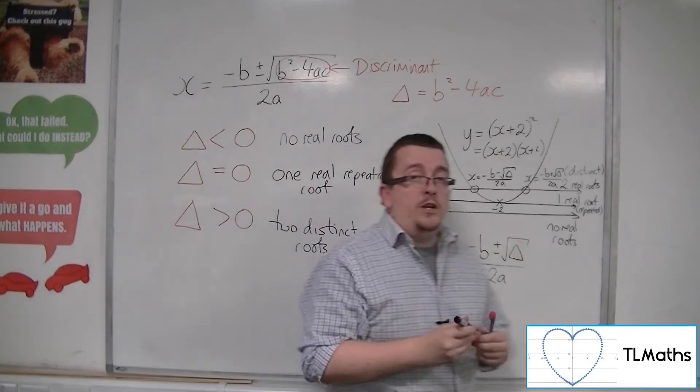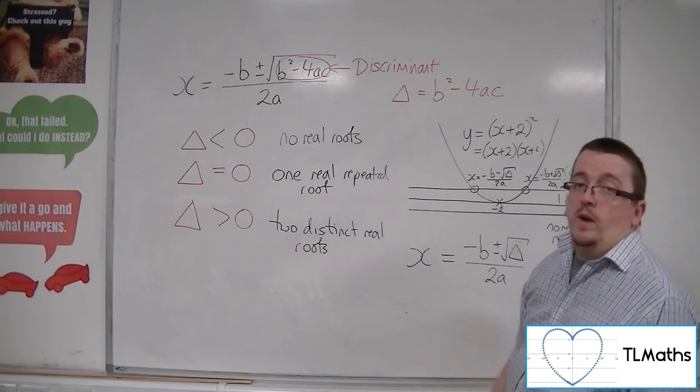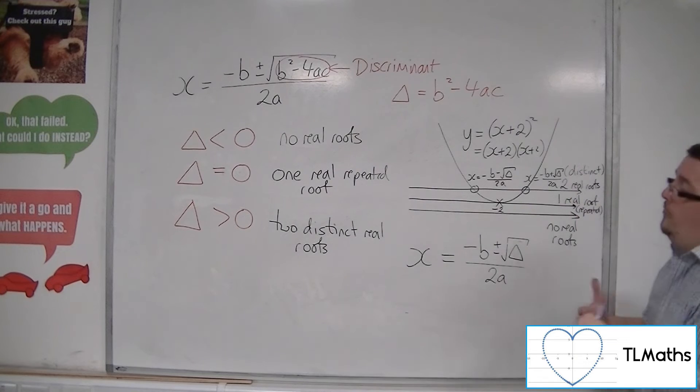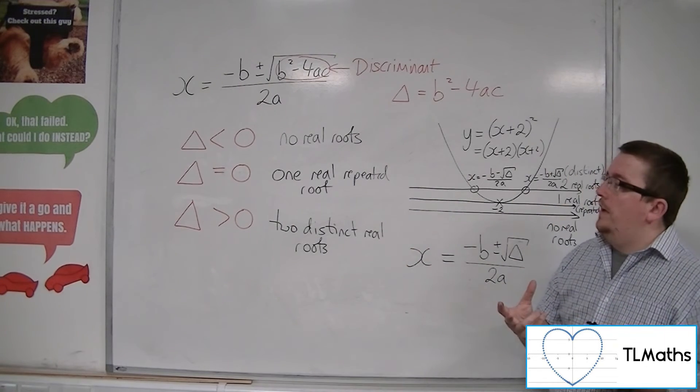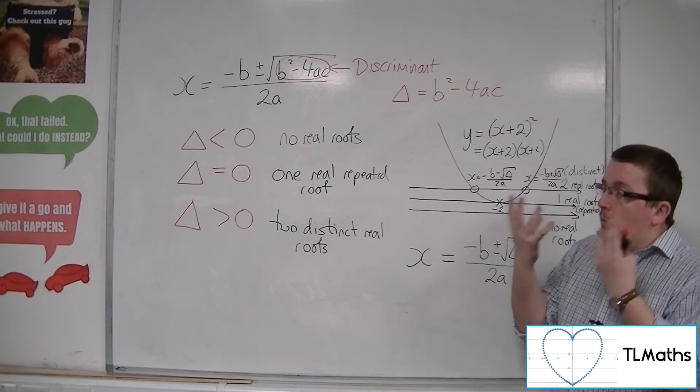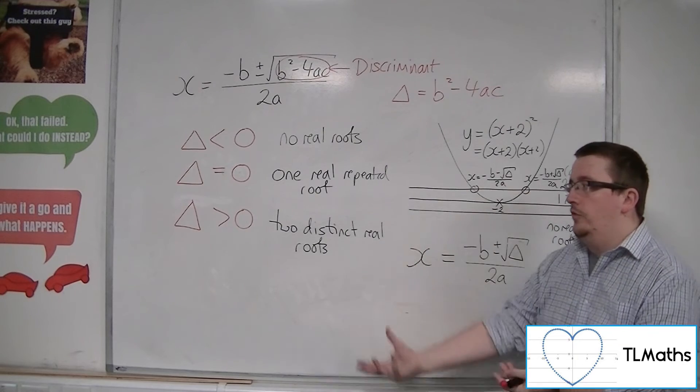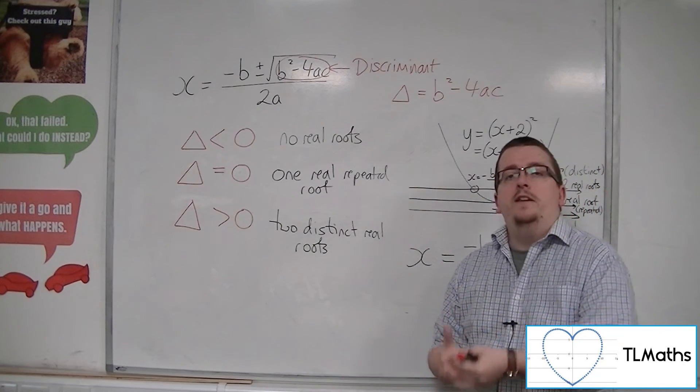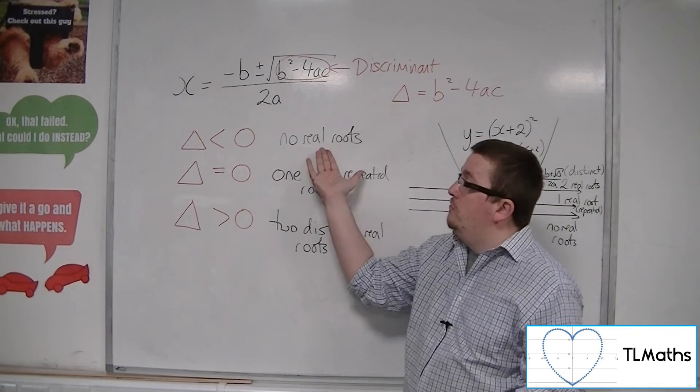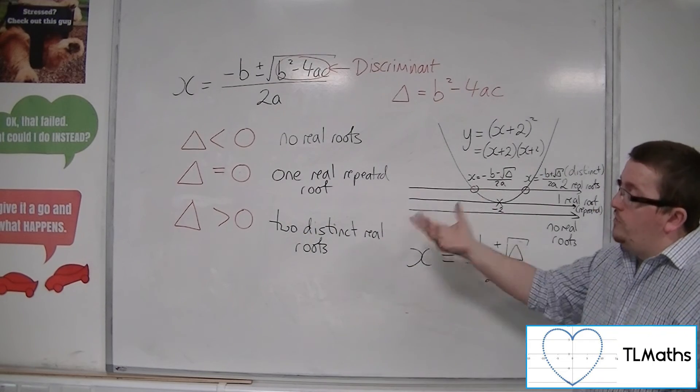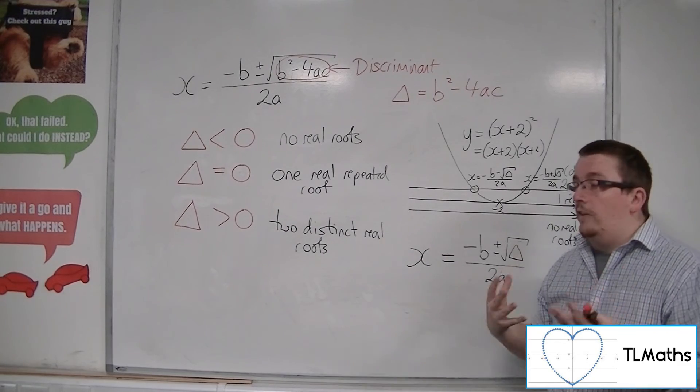So the value of the discriminant will identify for you which situation you're looking at. So if you were asked to determine whether the quadratic had no real roots, one real repeated root, or two distinct real roots, you could just use the discriminant, and that will tell you. If it's less than 0, you have no real roots. Equal to 0 is one repeated real root. And if it's greater than 0, it's two distinct real roots. And that's what we can use it for.